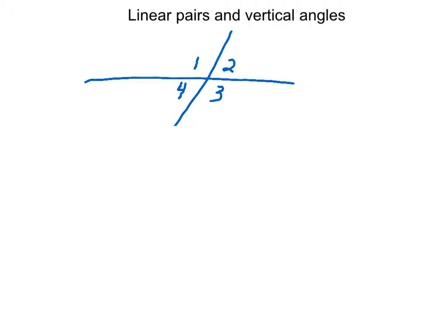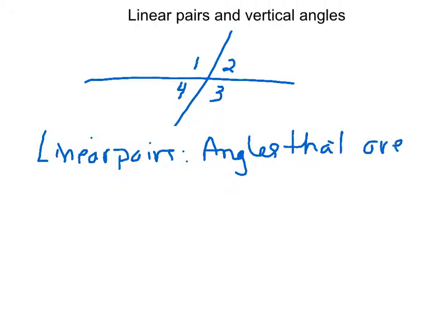Alright, so Linear Pairs are, let's see, and you want to put this in your notes, they are angles that are, ready for this word, adjacent to each other. Adjacent just means next to. It's another word that math problems like to throw out at you. You might as well get used to hearing it.